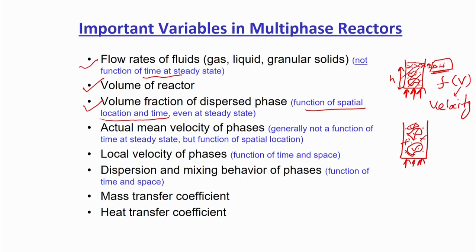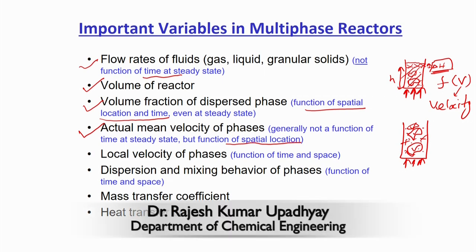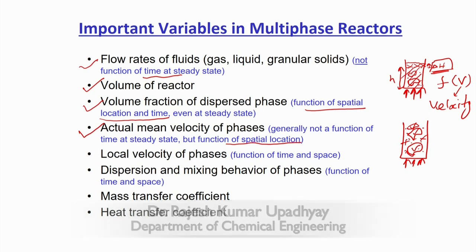Volume fraction is a critical variable to understand. Similarly, the mean velocity of the phases is important. The mean velocity of the gas phase or liquid phase is a function of position. In a bubble column, bubbles pass through the center, so at the center there is some bubble velocity while near the wall — where there are no bubbles — the bubble velocity is zero. If you plot velocity from minus r to plus r, you see very low velocity near the walls, very high velocity at the center, and again low near the other wall.